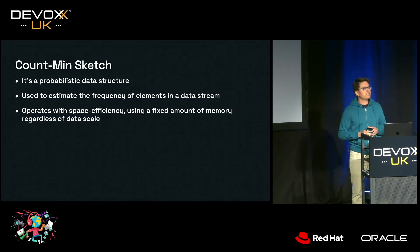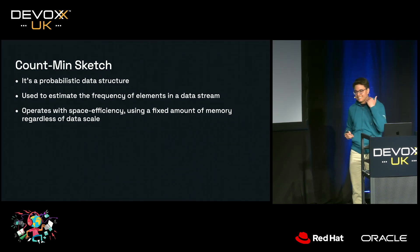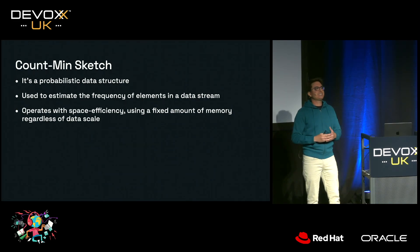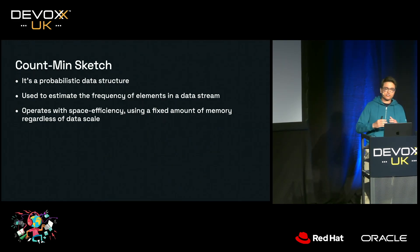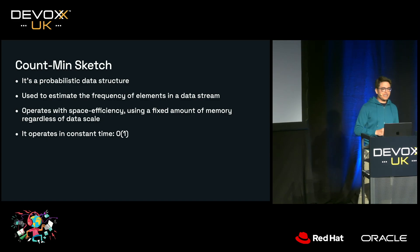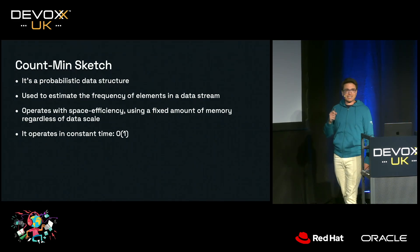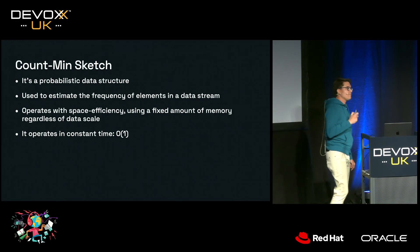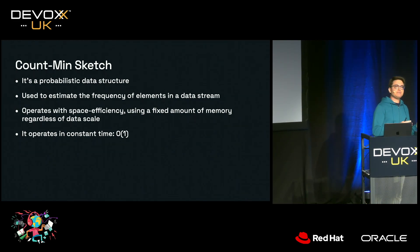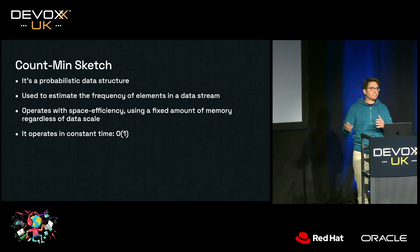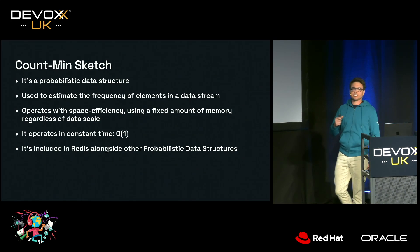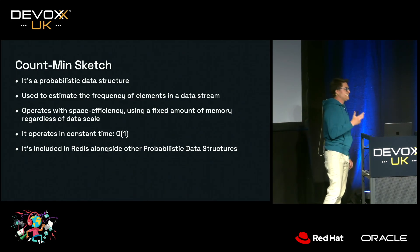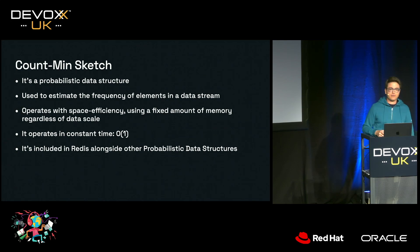It operates with space efficiency — that's one of the advantages. Once it's been initialized with, say, 300 kilobytes, it's going to be 300 kilobytes forever. You can add a million elements, count a billion elements — it's always going to be the same size. It also operates in constant time for inserting and retrieving data. So you have speed and memory efficiency by trading off accuracy — controlled accuracy. It's included in Redis Open Source 8 alongside other probabilistic data structures such as Bloom Filters, TopK, T-Digest, Cuckoo Filter, and a few others.